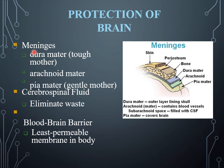The function of these meningeal layers differs. Cerebrospinal fluid is involved in the elimination of waste. One of the most impermeable barriers inside the brain is the blood-brain barrier, which is the least permeable membrane in the body. All these layers, their functions, and their locations are important from the exam point of view.